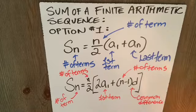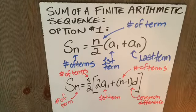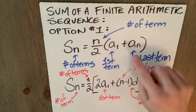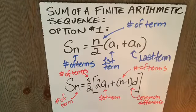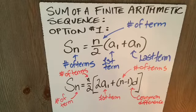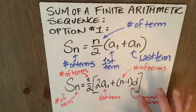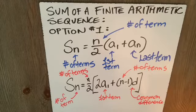So students often ask, how do I know which one to use? Well, whichever is easier depending on the given information. If I'm given the number of terms, the first term and the last term, I use that formula. Why? Because it's easy. If I'm not given the last term, but I do know the number of terms, the first term and the common difference, then I use this one. I'm always looking to use the easier formula. That's what guides my decision.